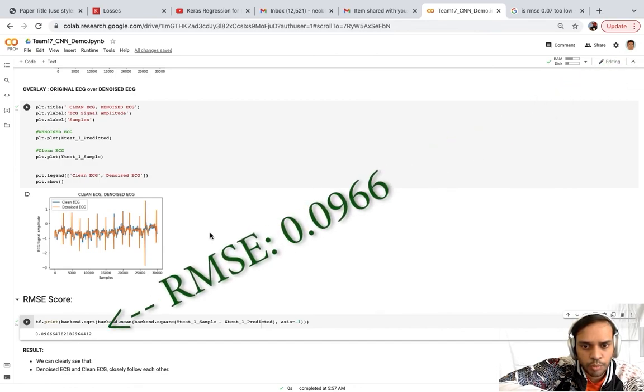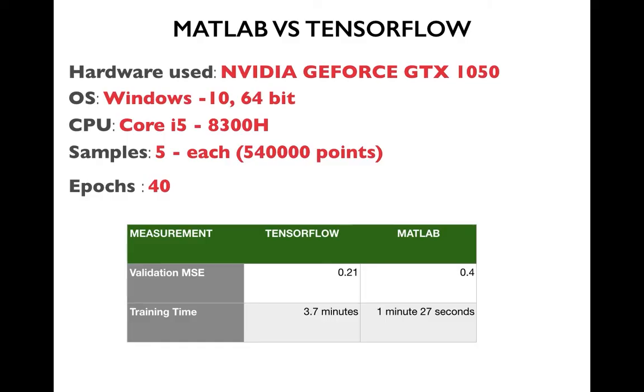And the final output is the value of the RMSE score. It is around 0.1. So running tests on my local machine for a sample size of 5 and for 40 epochs showed that the value of the validation RMSE was lower for TensorFlow compared to MATLAB. But in terms of the training time, MATLAB took a shorter time to train compared to TensorFlow.